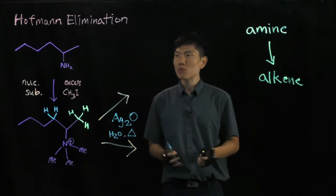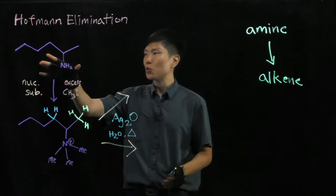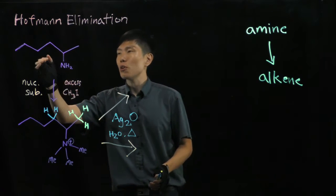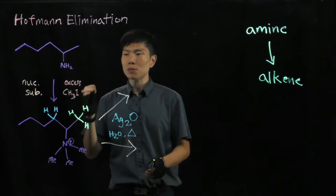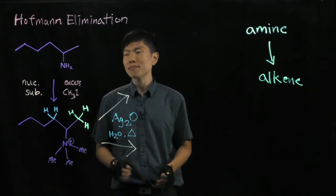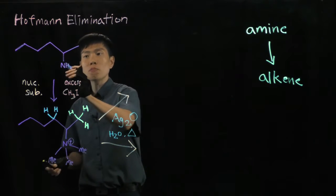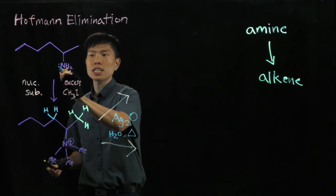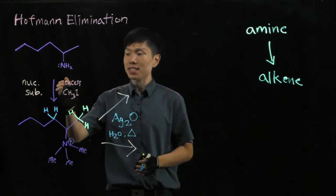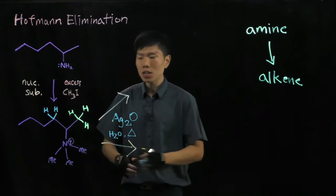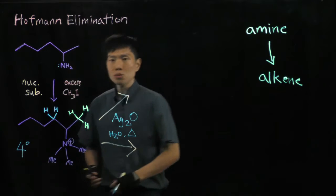Now let's understand the chemistry behind this Hoffman elimination. I'm showing you an asymmetrical amine that's primary. In the first step, they add excess methyl iodide, and this is a nucleophilic substitution because we are using a lone pair of electrons on the nitrogen to kick out the iodide. If you add excess, it means that after that we will form a quaternary ammonium salt.